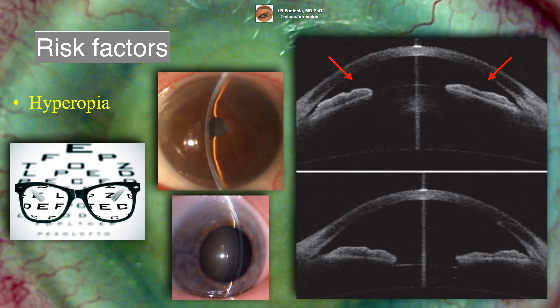Risk factors predisposing to phacomorphic glaucoma include hyperopia, which is associated with a smaller anterior chamber.